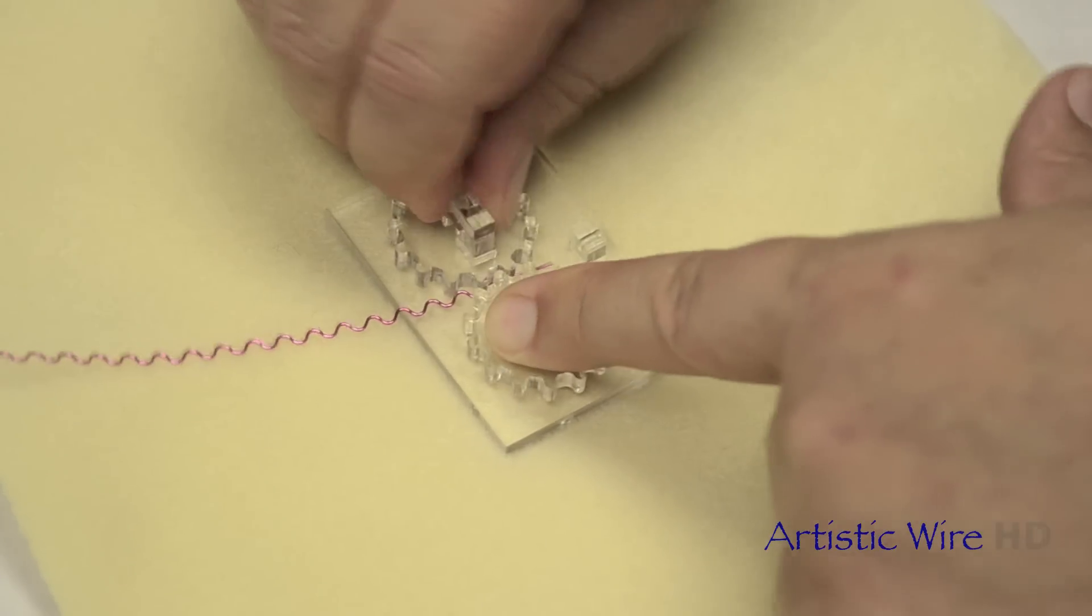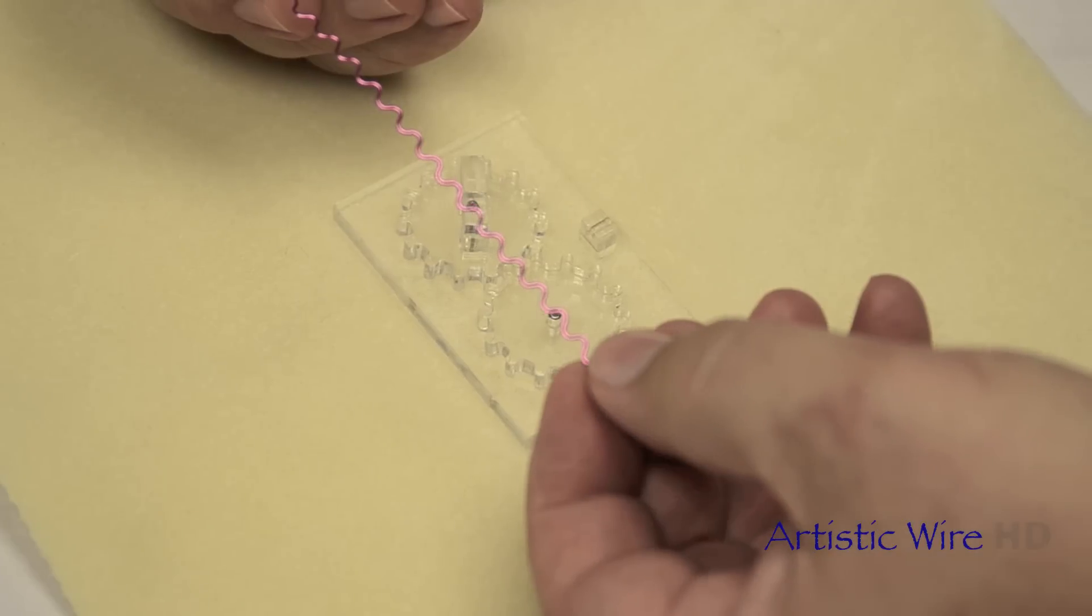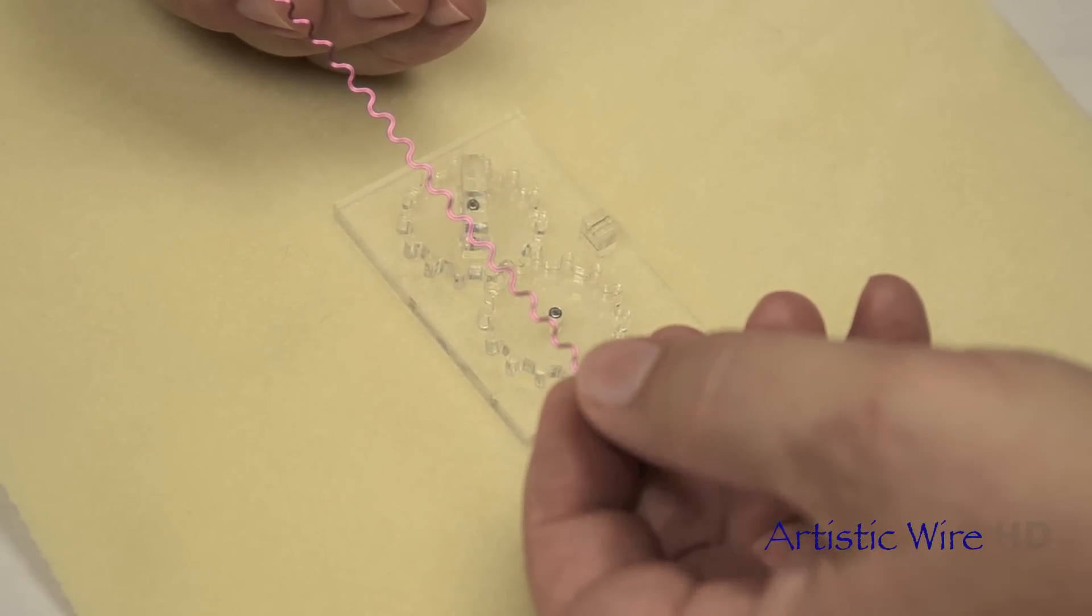This wire can be used for various things, dangles on earrings, dangles on necklaces, or you can flatten it to keep the shape much easier.